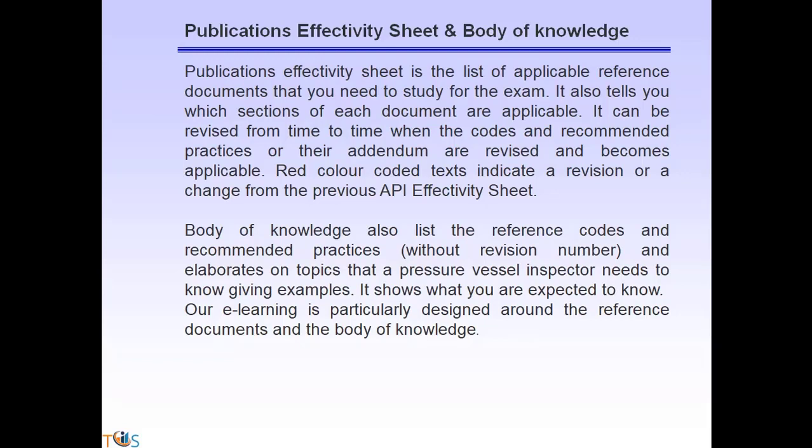The Publication Effectivity Sheet is the list of applicable reference documents you need to study for the exam, including which sections are applicable. It is revised when codes, recommended practices, or addenda are updated. Red-colored text indicates a revision from the previous effectivity sheet. The Body of Knowledge lists reference codes without revision numbers and elaborates on topics a pressure vessel inspector needs to know. Our e-learning is designed around these reference documents and revised accordingly when the Publication Effectivity Sheet and Body of Knowledge change.